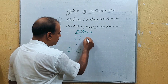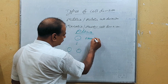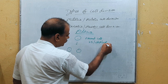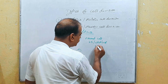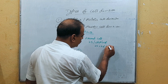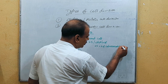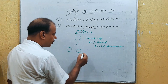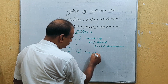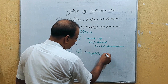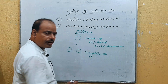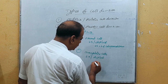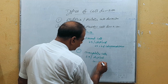In the parent cell, it contains 2n, meaning the diploid number of chromosomes. For example in human beings, 2n equals 46 chromosomes. So one parent cell divides to form two daughter cells, and the 2n number of chromosomes — diploid — is again present in each daughter cell, where 2n equals 46 chromosomes.